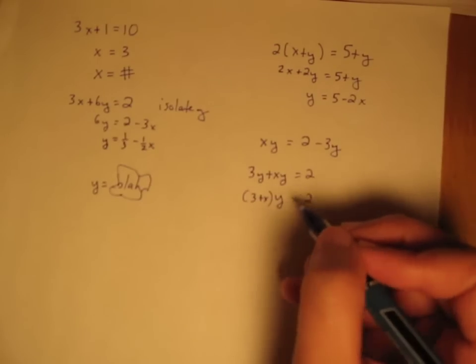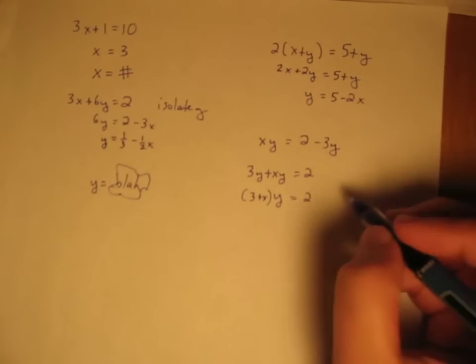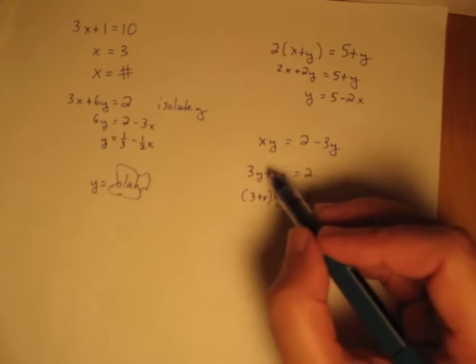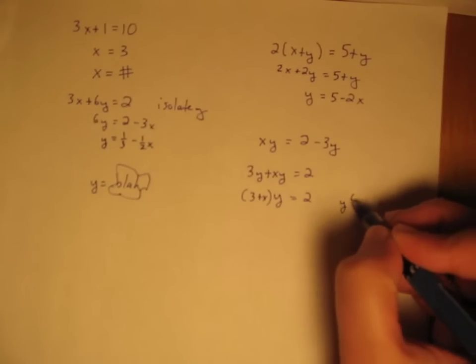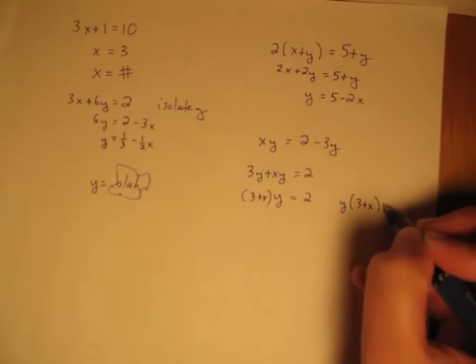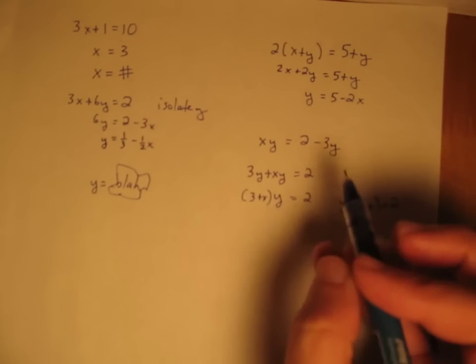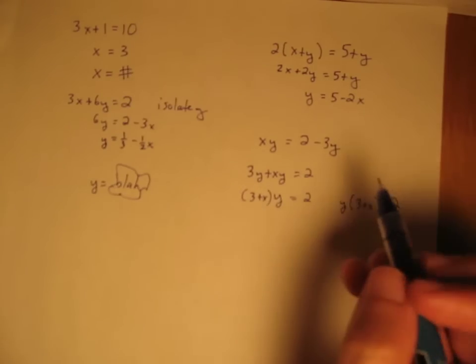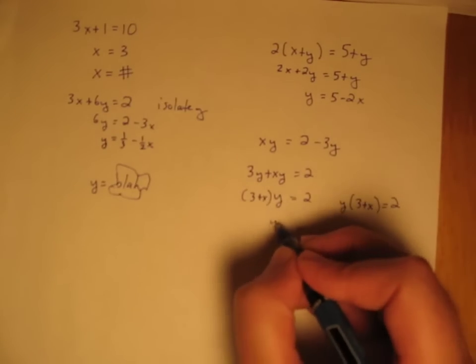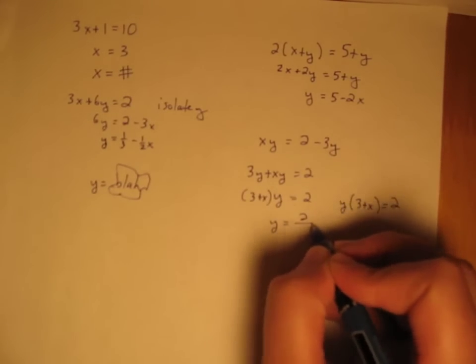You might be more comfortable thinking of it as pulling a y out front. That would be y times 3 plus x equals 2. Same thing. So finally to solve for y, we need to divide by its coefficient, which here is 3 plus x, and we get y equals 2 over 3 plus x.